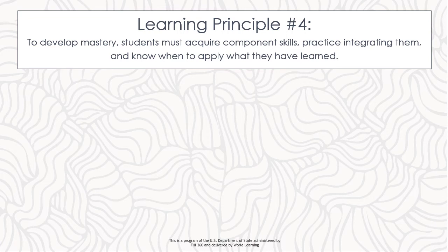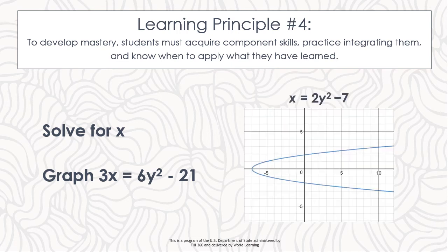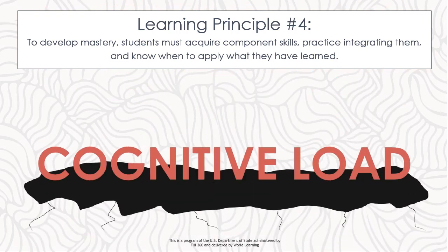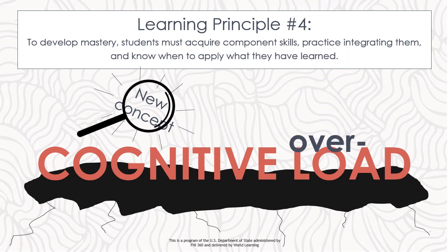For example, in a math class, if students have to both solve for x and graph the equation 3x = 6y² − 21, it is better to explain and practice each step in isolation. In a later moment, the relationship between solving for x and graphing the results should be reinforced. This principle relates to the concept of cognitive load. When a concept is new, it needs to be the focus of exploration. Trying to understand too many new concepts all at once can lead to cognitive overload, which results in confusion and does not result in learning.